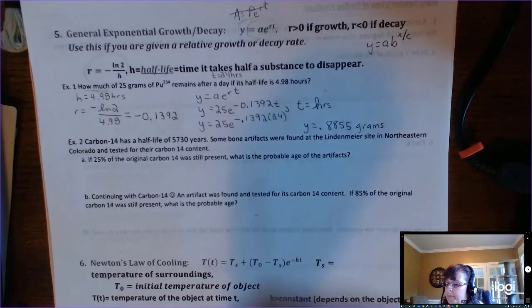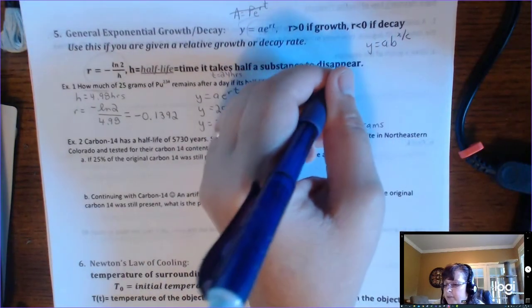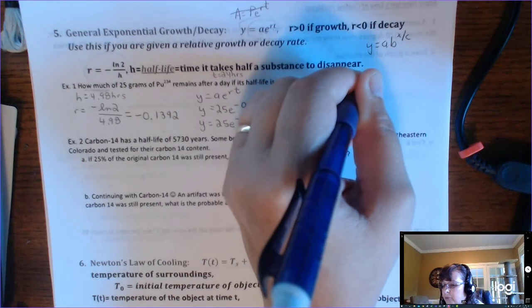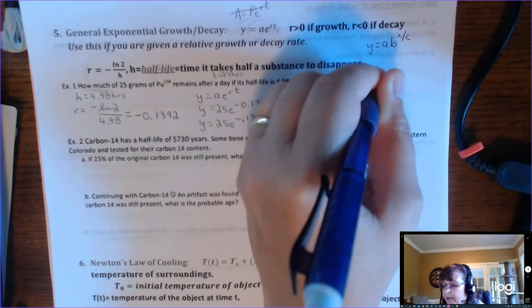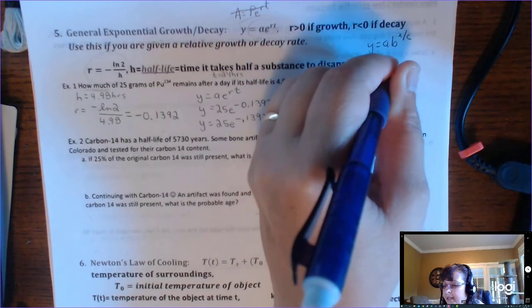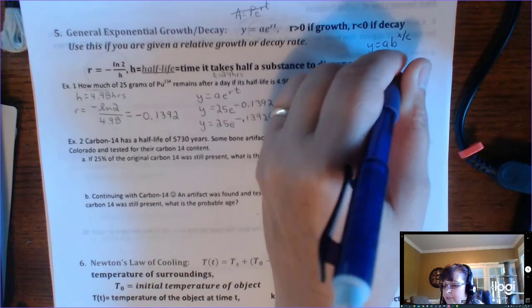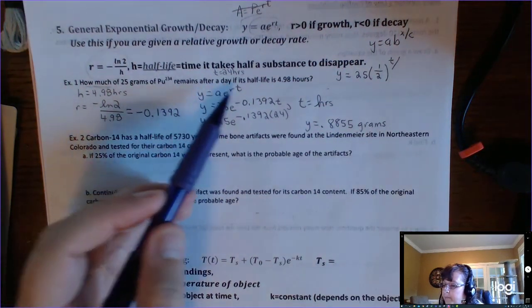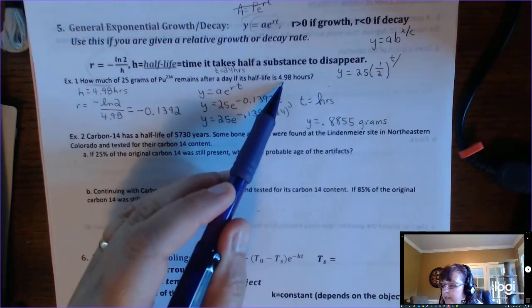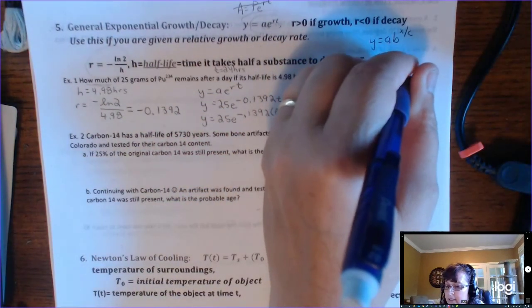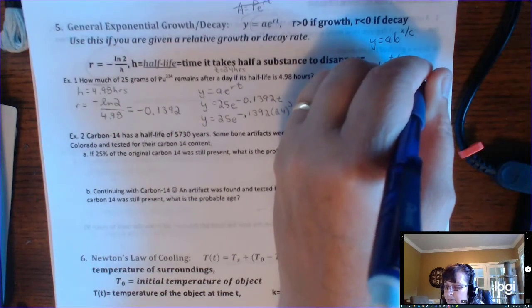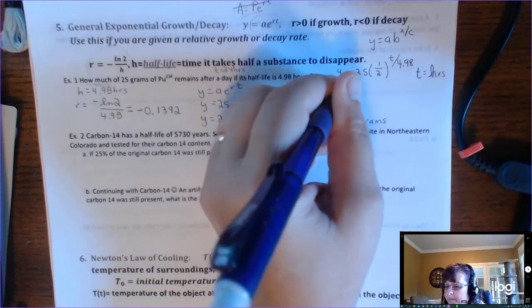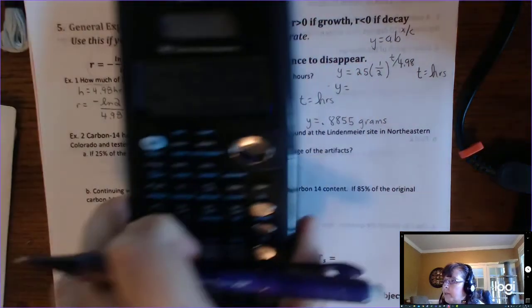All right, let's compare answers. So let's say I did this one. The general formula, Y equals initial value 25, growth factor half-life, so one-half, T divided by how long does it take for us to use half-life? 4.98 hours. So if you use the general form, not relative growth and decay form, let's see what we get.